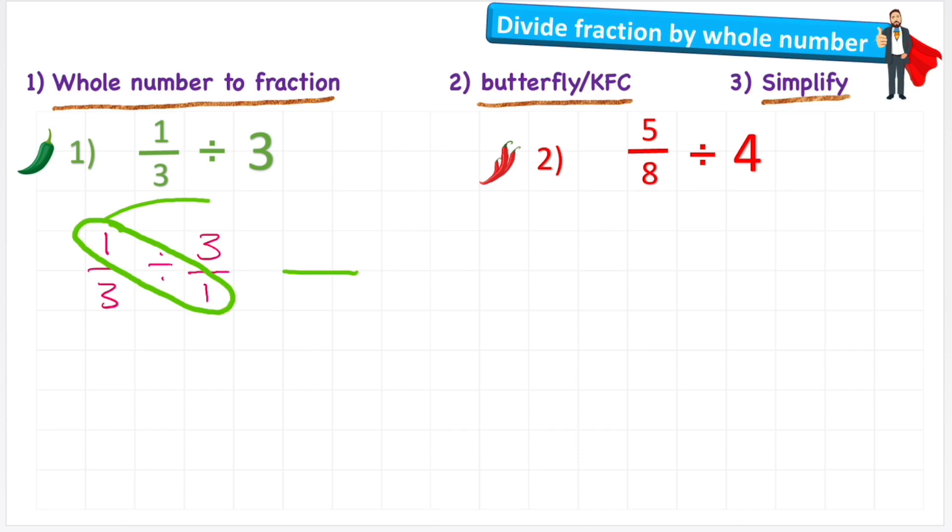So one multiplied by one equals one. And then to get the denominator, all I do is multiply the denominator of the first fraction by the numerator of the second. Three times three is nine. So my answer to one third divided by three equals one ninth.